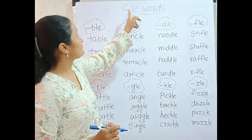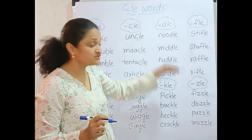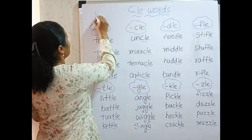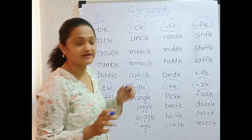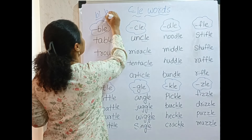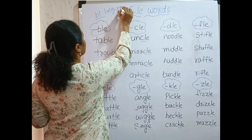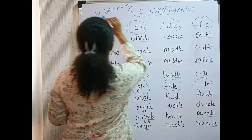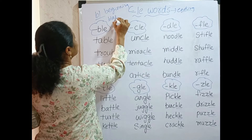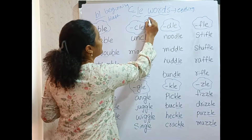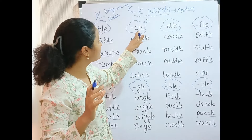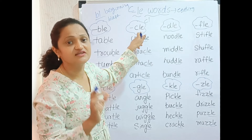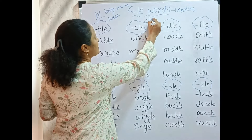So, if the word ends with LE only, we will use these sounds. If the word starts with BL, then this is a blend — only in the beginning. And this one is for the ending. In the end of the word, if C-L-E is there, then it is KAL. But in the beginning, we read it as CLO — like CLO and CLAP.